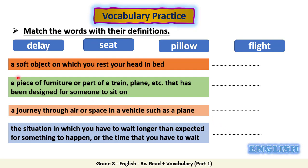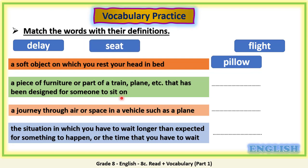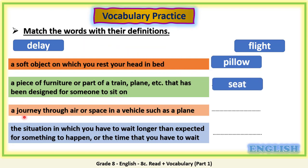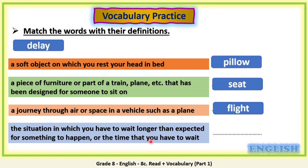Welcome back, my dear students. Now let's check your answers. A soft object on which you rest your head in bed — that's a Pillow. A piece of furniture or part of a train, plane, etc. designed for someone to sit on — that's a Seat. A journey through air or space in a vehicle such as a plane — that's a Flight. The situation in which you have to wait longer than expected — that's the word Delay.